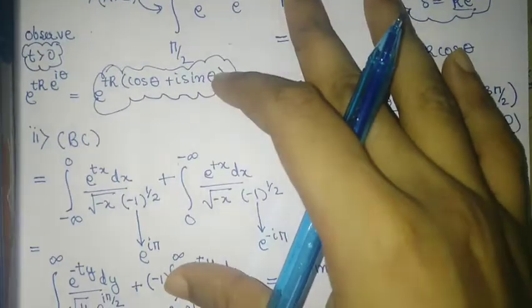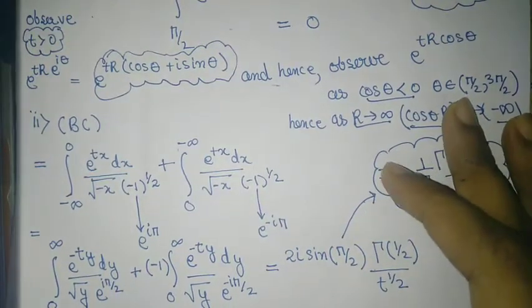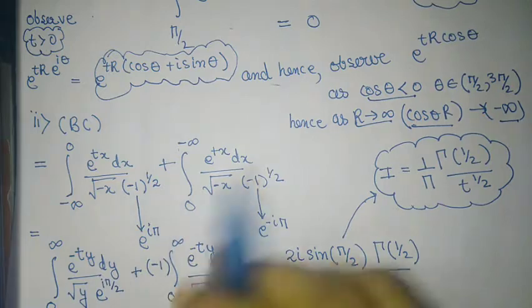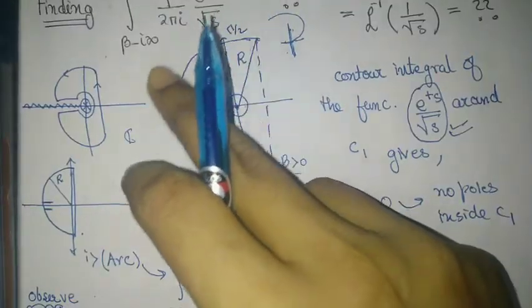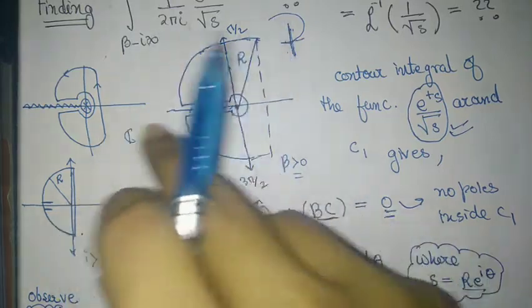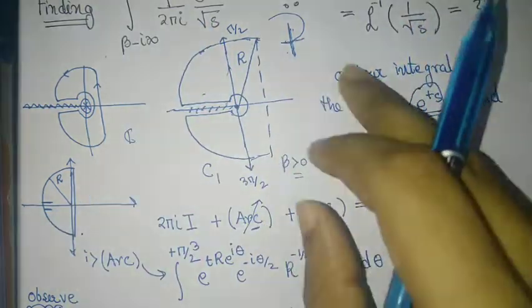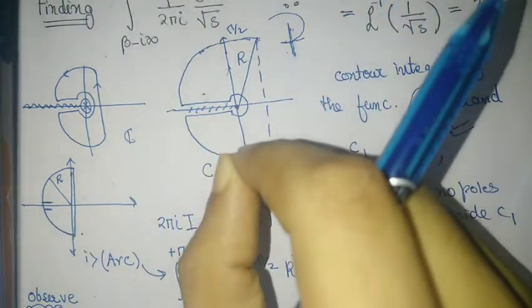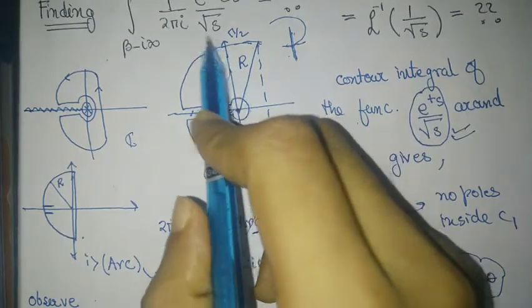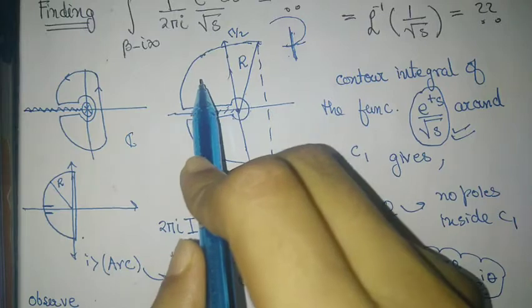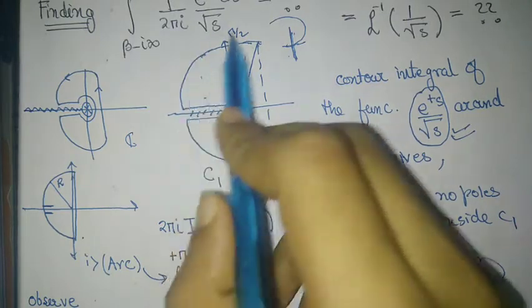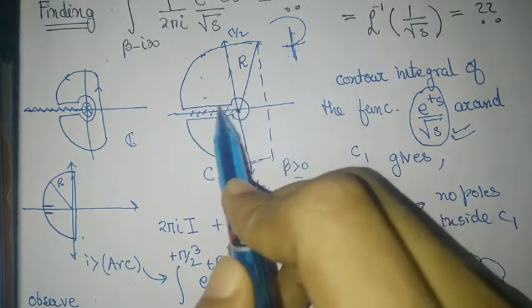So there is an exponential die off here and the arc integral just simply dies off. Now I have to look at the branch cut integral. Here is what is important. So you see, the branch cut integral, I parameterize s to run along the real axis. So now s can only take real value and I set r tending to infinity so that this arc term vanishes.